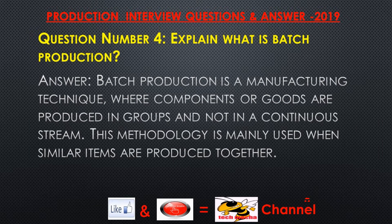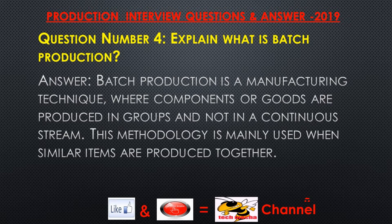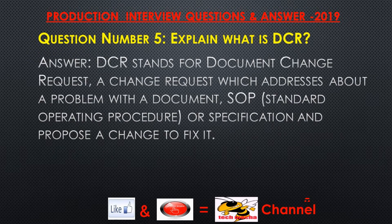Question number four: Explain what is batch production? Answer: Batch production is a manufacturing technique where components or goods are produced in groups and not in a continuous stream. This methodology is mainly used when similar items are produced together.